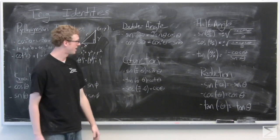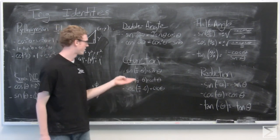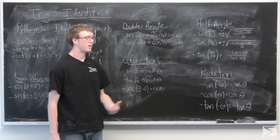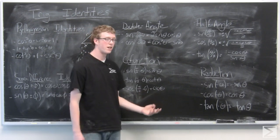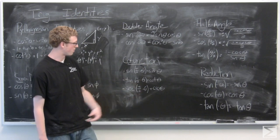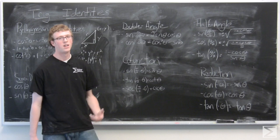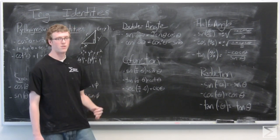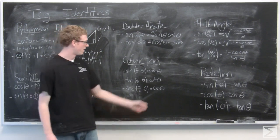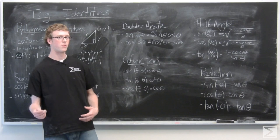Next are the cofunction identities. Three are written out here, but there are actually six total. Sine(π/2 − θ) = cosine θ, and cosine(π/2 − θ) = sine θ. Tangent(π/2 − θ) = cotangent θ, and cotangent(π/2 − θ) = tangent θ. Secant(π/2 − θ) = cosecant θ, and cosecant(π/2 − θ) = secant θ.